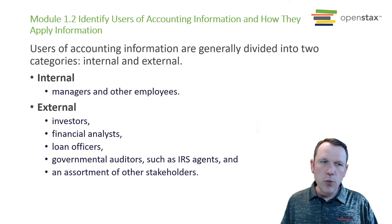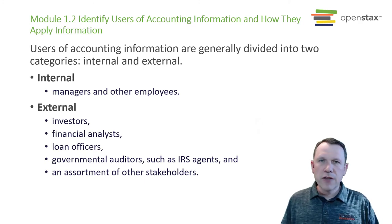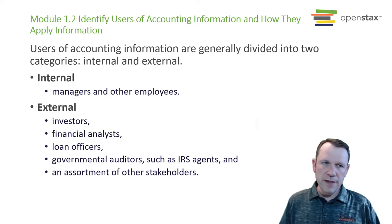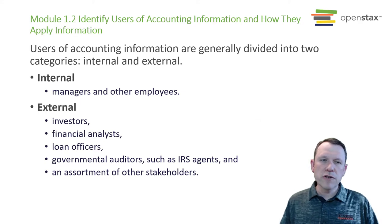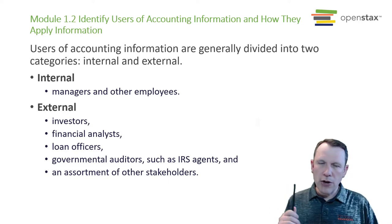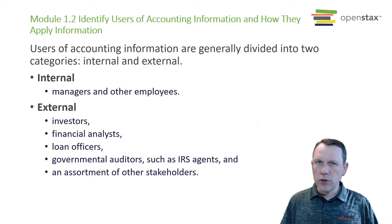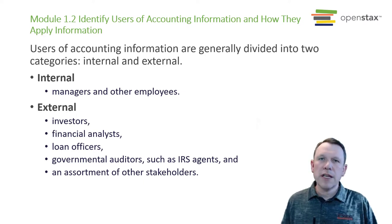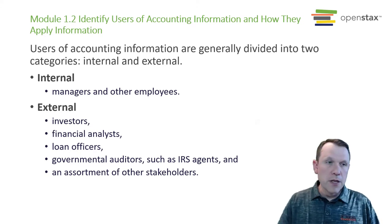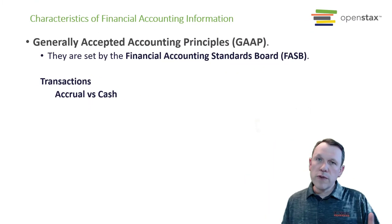Loan officers typically work for banks and need financial accounting information to decide whether to issue a loan or not. Government auditors and the IRS want to make sure you're paying the taxes you owe and are in compliance with government regulations. Last but not least, there's an assortment of other stakeholders — the community, fellow competitors who often use external financial information to make decisions for their own companies and compare themselves historically.